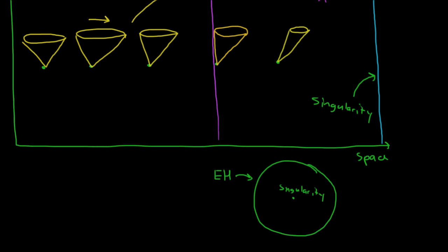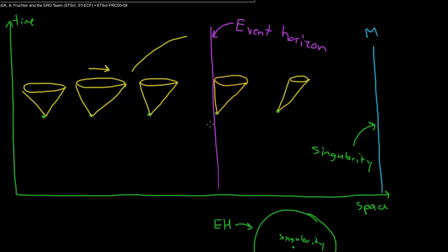If you cross the event horizon, if you cross this boundary, then you will be in a region where no matter what you do, your future light cone points towards the singularity. No matter what you do, the singularity is in your future, so that's where all of the mass ends up, including you if you go past the event horizon. Now that we have this picture for a black hole, we can address some of the common misconceptions about the properties of black holes, and we will do this in the next video.